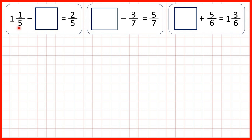So first, one and one-fifth minus something equals two-fifths. So here it's the second number in our subtraction, or the subtrahend, that's missing. So when the subtrahend is missing, we still use subtraction to find our missing number.